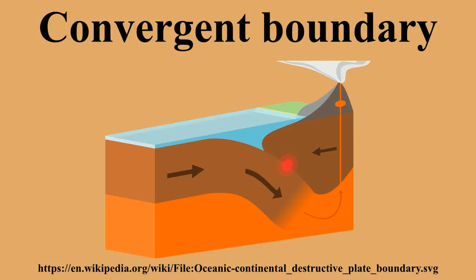Plates may collide at an oblique angle rather than head-on to each other, and this may cause strike-slip faulting along the collision zone. In addition to subduction or compression, not all plate boundaries are easily defined. Some are broad belts whose movements are unclear to scientists. One example would be the Mediterranean-Alpine boundary, which involves two major plates and several microplates.